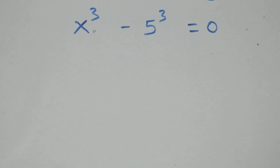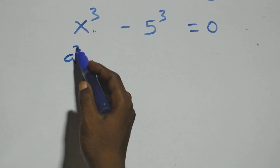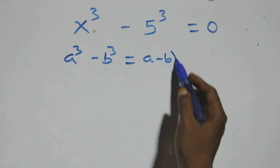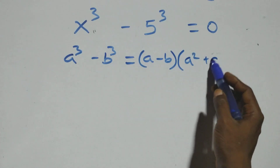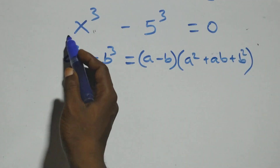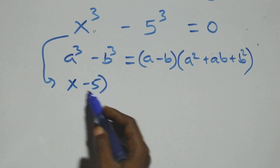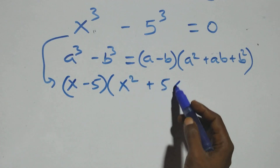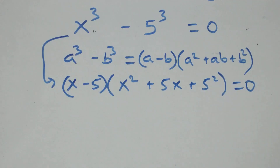Now solving the second case. This follows from a cubed minus b cubed equals (a minus b)(a squared plus ab plus b squared). So we get (x minus 5)(x squared plus 5x plus 5 squared) equals zero, which can be written as (x minus 5)(x squared plus 5x plus 25) equals zero.